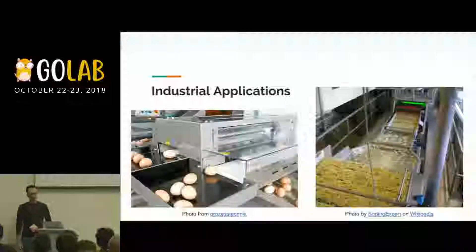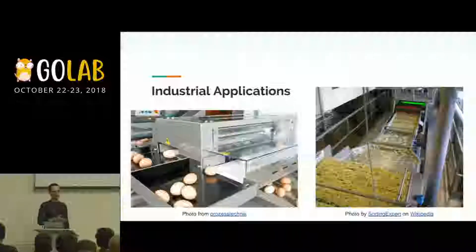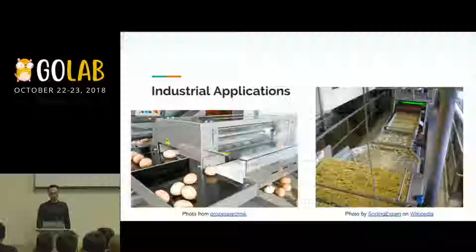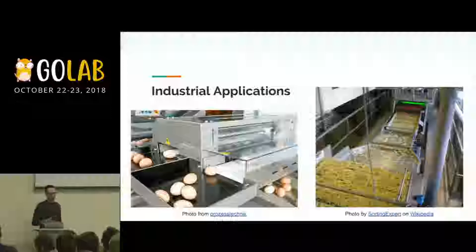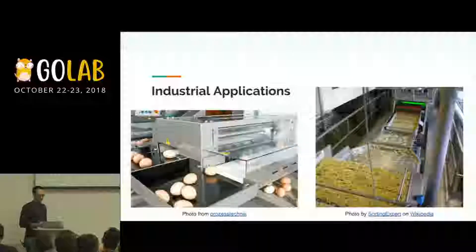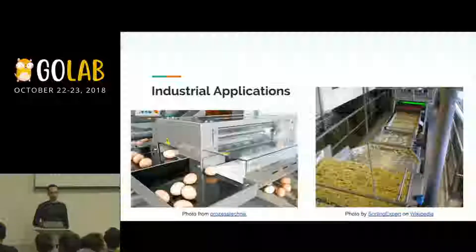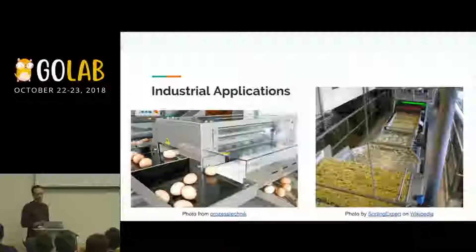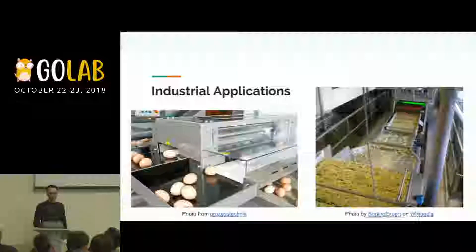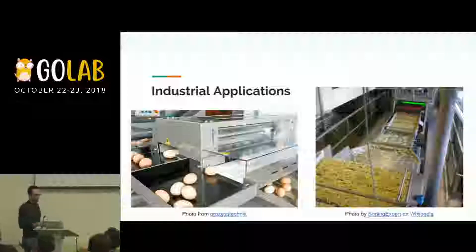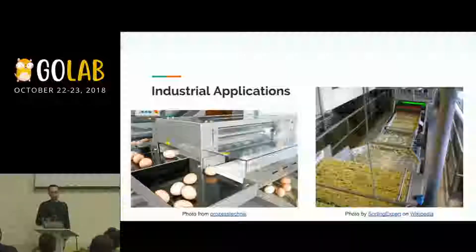These applications usually have an industrial scale — they are big and very different according to the items we have to analyze. For example, we can see a machine classifying eggs and ejecting them into different exits. We can also have pasta sorting machines, which go much faster than the egg machines and deal with smaller items.